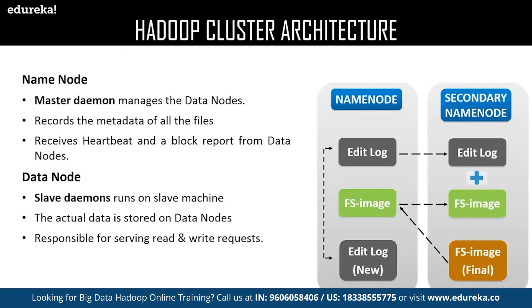The NameNode is responsible for managing the health of all the DataNodes. It receives a heartbeat from all the DataNodes at a particular interval of time and also receives a status update of the task assigned. If any DataNode fails to respond with a heartbeat, the NameNode considers that DataNode to be dead and reassigns the task to the next DataNode. DataNodes are called slaves of the NameNode and are responsible for storing the actual data and updating task status and health status to the NameNode in the form of a heartbeat.